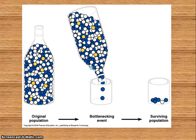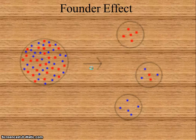This is showing the bottleneck effect. The cheetah would be another example of the bottleneck effect. And the founder effect is a couple of individuals starting off a new colony.